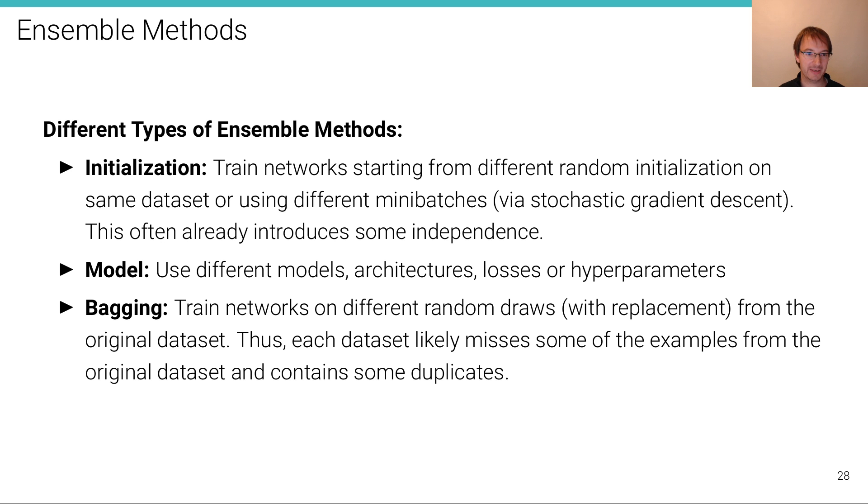Bagging refers to training networks on different random draws with replacement from the original data set. So we're creating k new data sets where we create each of these data sets by randomly drawing elements from the original data set with replacement. That means that in these new data sets, there's likely missing some of the examples in the original data sets, because we're not going to by chance draw each element exactly. And there's likely also some duplicates in these data sets. But the data sets are the same size, and that's called bagging.